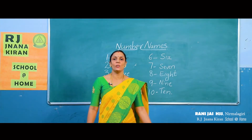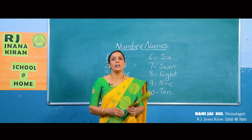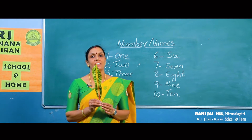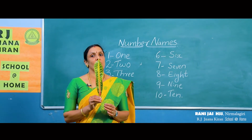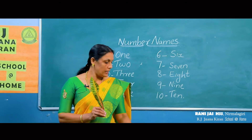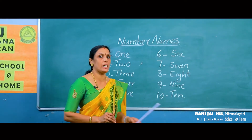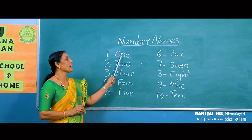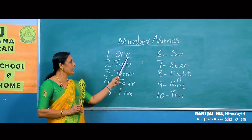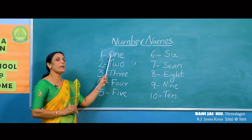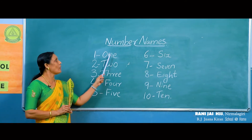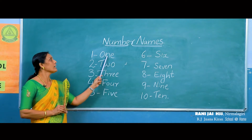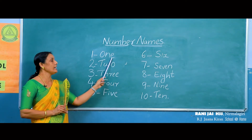Okay children, look here. How many leaves in my hand? Okay, one leaf. The number name of 1 is O-N-E. Spell the number 1 as O-N-E.